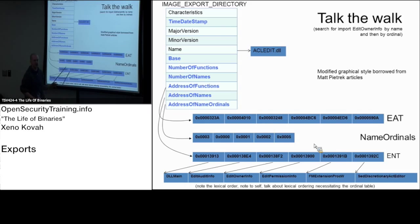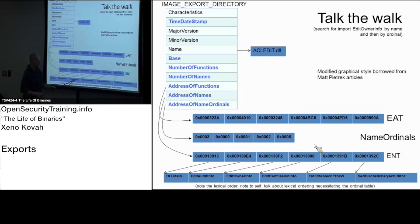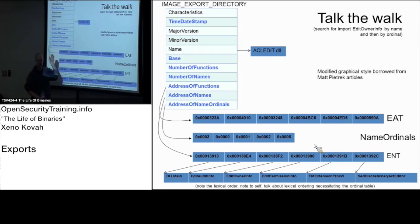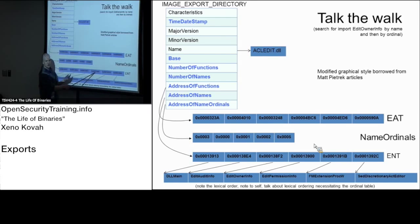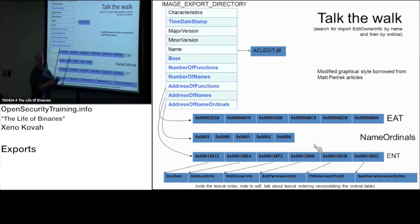Let's say we're looking for a particular function to import by name — 'edit owner info.' The OS loader is trying to find the RVA for edit owner info. It goes to the export names table and does a binary search. This table has six entries. Going to the middle, that entry has an RVA pointing to the string 'edit permission info.' Comparing: 'edit owner info' vs 'edit permission info' — EDITO versus EDITP. O is less than P, so it's not on that half of the array; it must be in the earlier half.